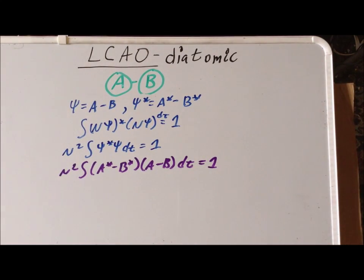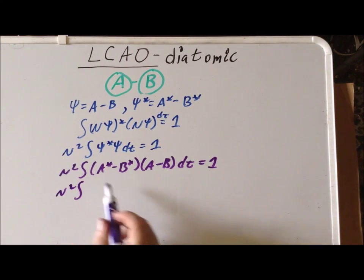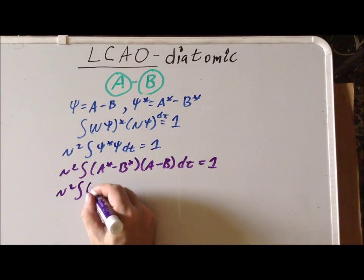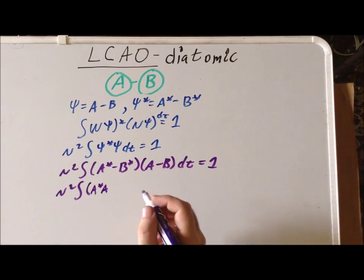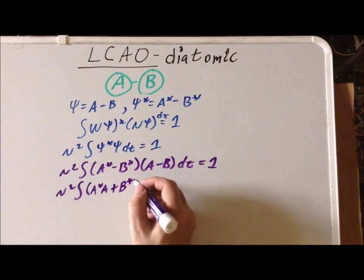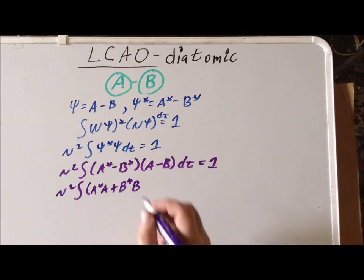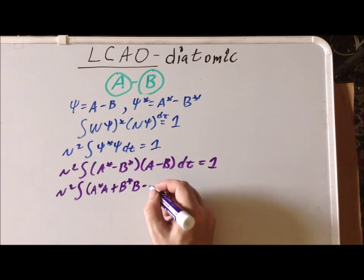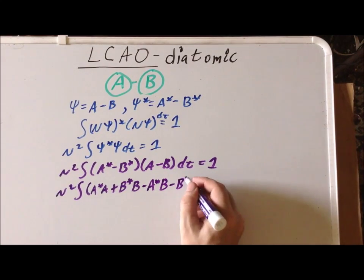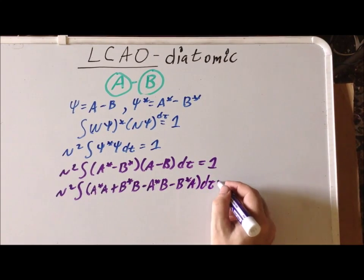Now we can FOIL to work out what this expression is, and we see that is going to give us a-star·a plus b-star·b — written in a slightly different order than we would get from FOILing, but we get the same exact terms — minus a-star·b minus b-star·a, d-tau, and this is all equal to 1.